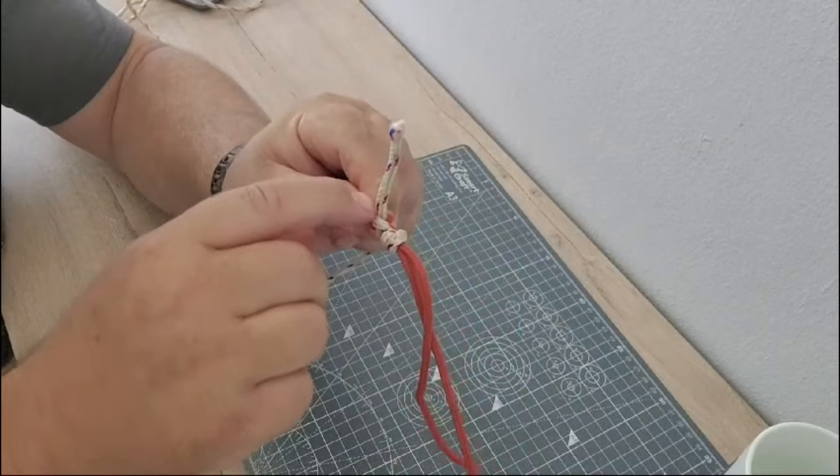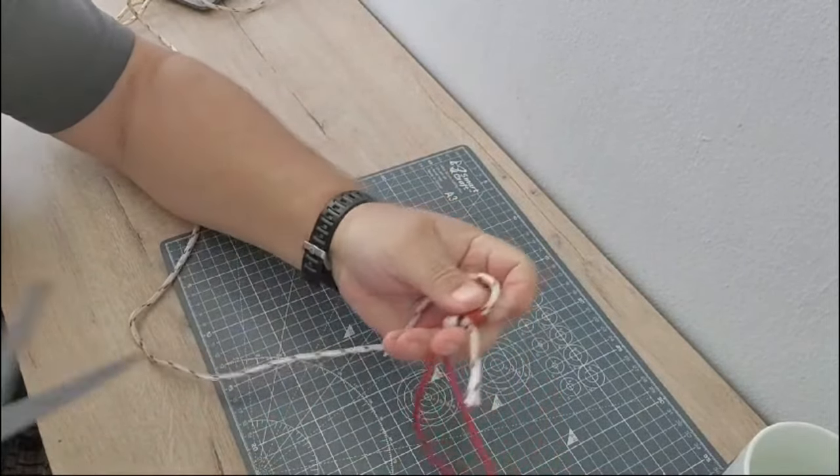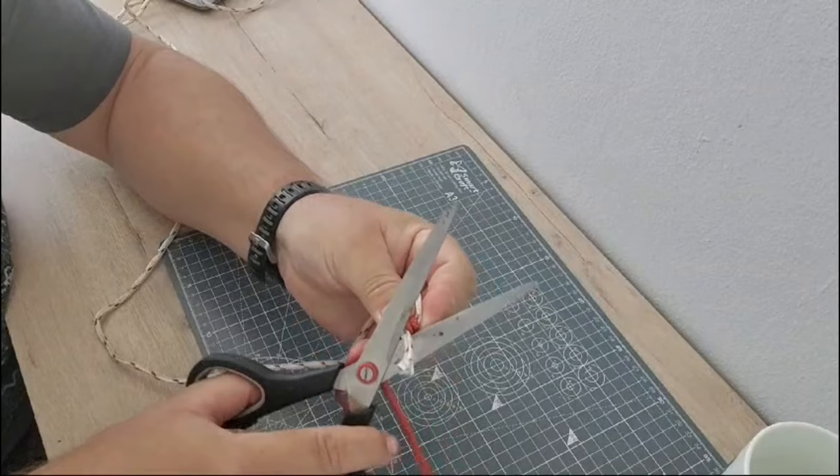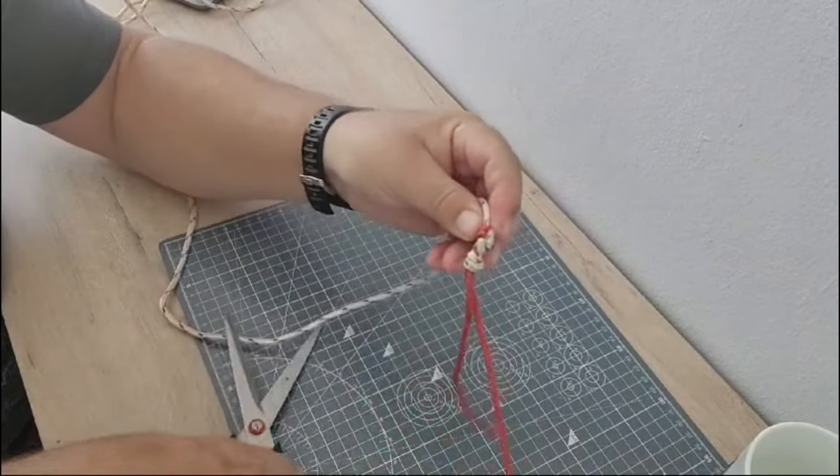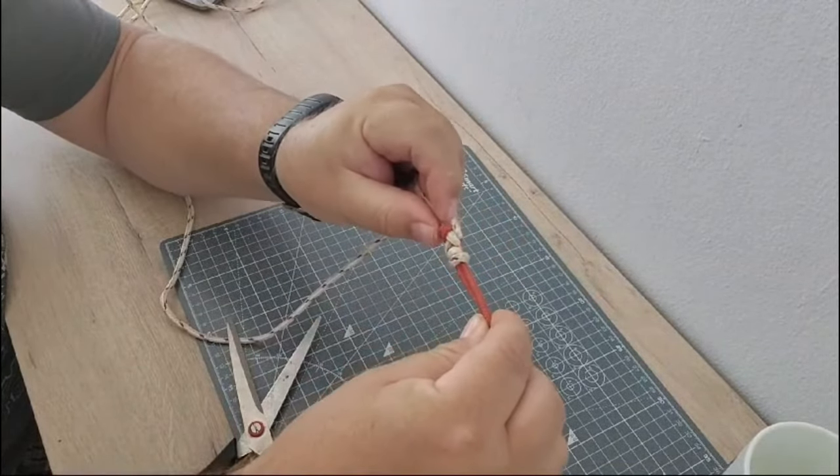Now you can cut the tag end as close as you can to the knot. Don't cut the knot, just the tag end, so it goes through the rings or the eyes of the rod quite easy.